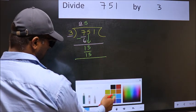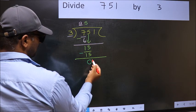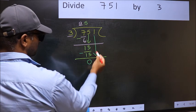Now you should subtract. 15 minus 15, 0. After this, bring down the beside number. So 1 down.